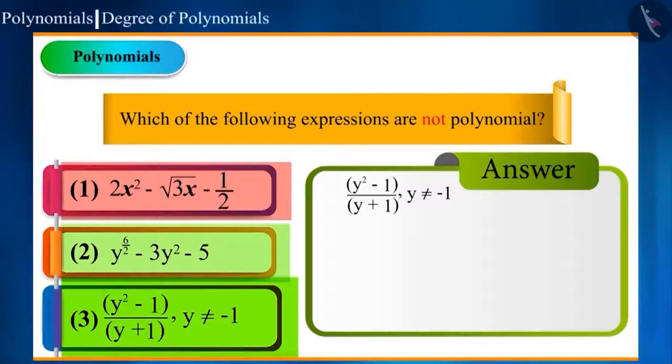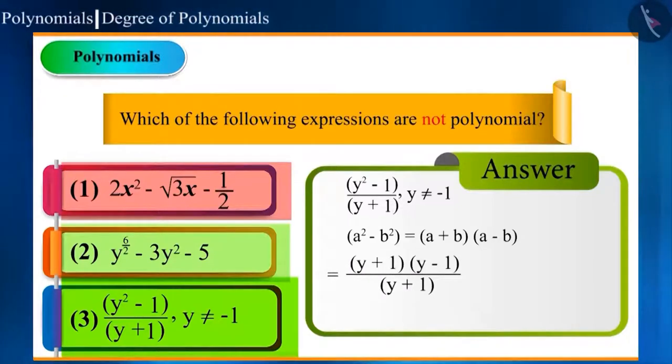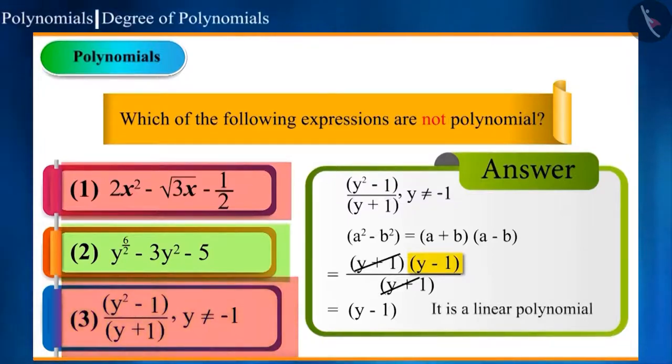Like using algebraic identity, a square minus b square is equal to a plus b, a minus b. The numerator can be written as y plus 1, y minus 1. This would become y minus 1 by cancelling y plus 1 from numerator and denominator. Hence, it is a linear polynomial.